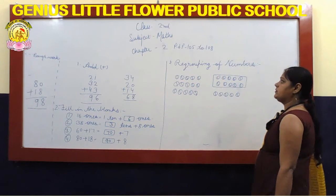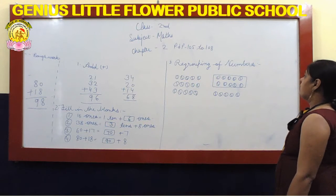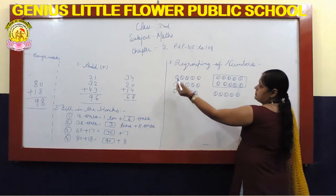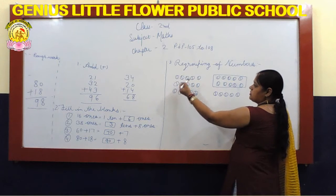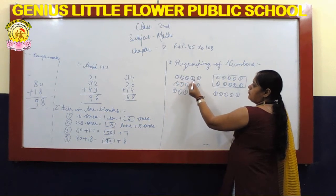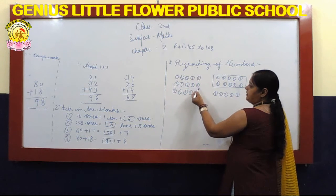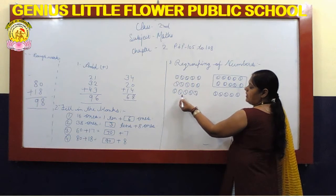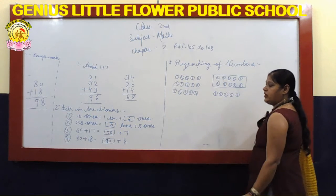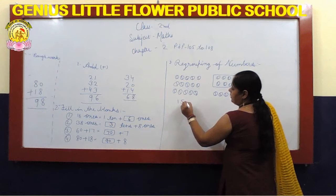Question number 3: Regrouping of numbers. Sabse pehle, aap balls ko count ki jiye — kitni balls hain? 1, 2, 3, 4, 5, 6, 7, 8, 9, 10, 11, 12, 13, 14, 15. 15 balls is equal to 15.